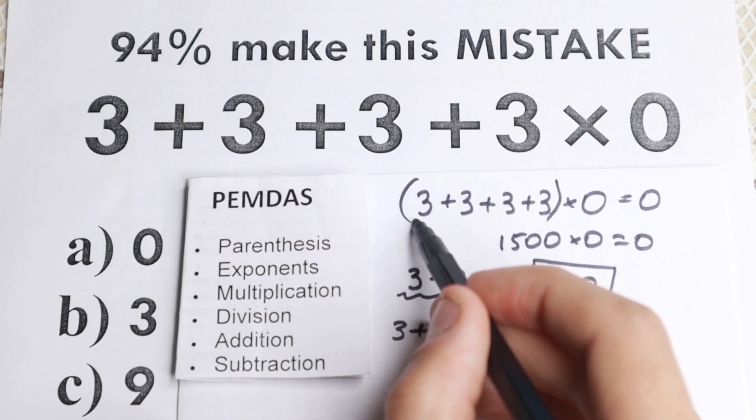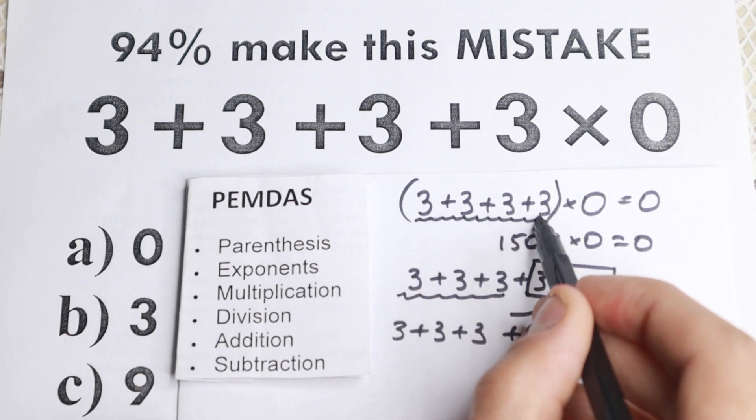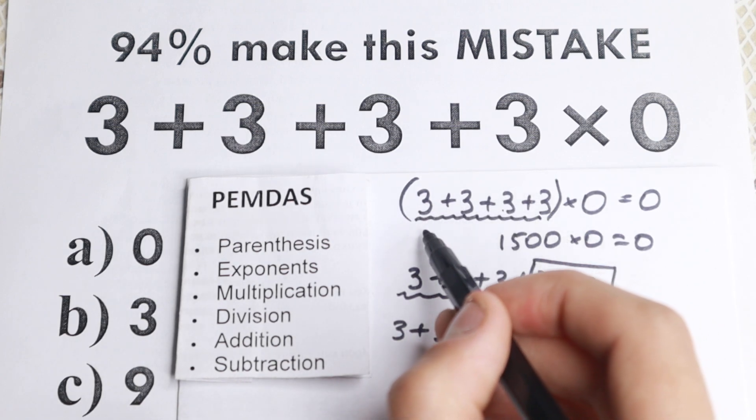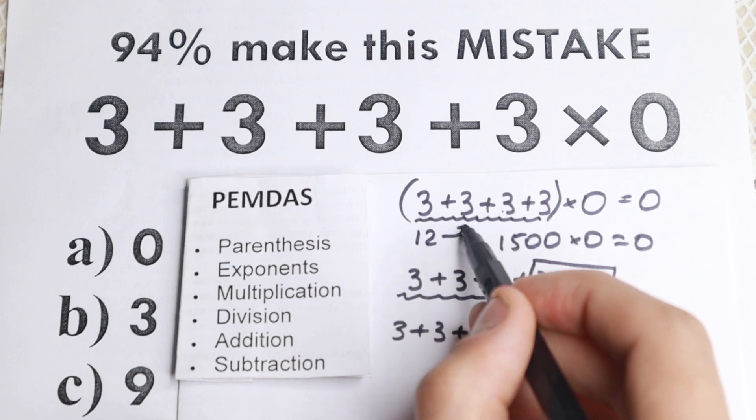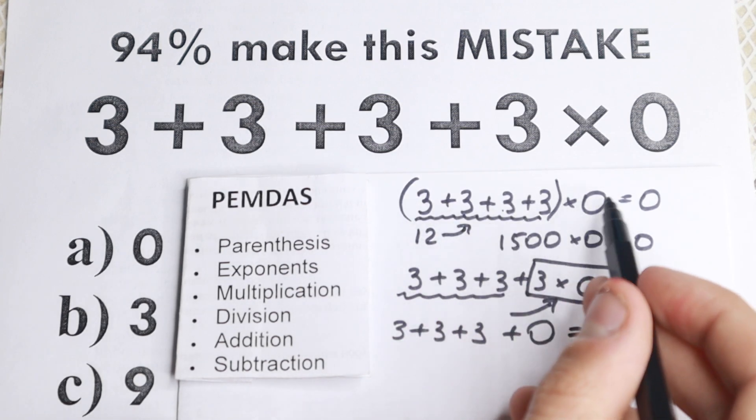So we need to start with this parentheses at first. We have like 3 plus 3 plus 3 plus 3, we have 12. And then, as I told before, doesn't matter what number multiplying by 0, we will have 0.